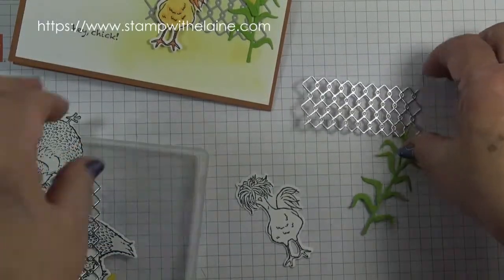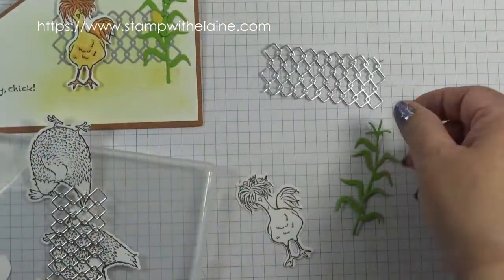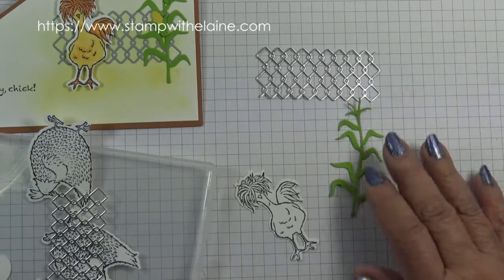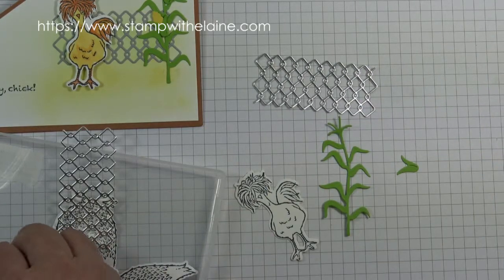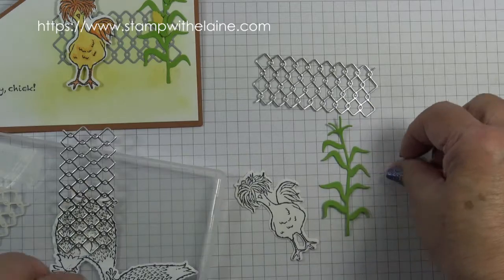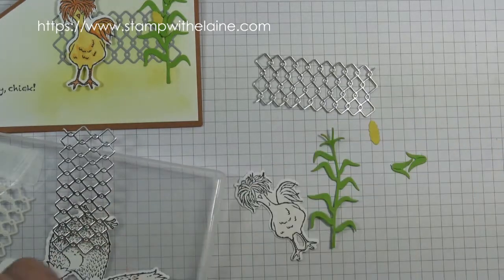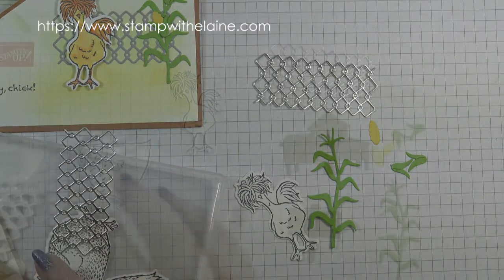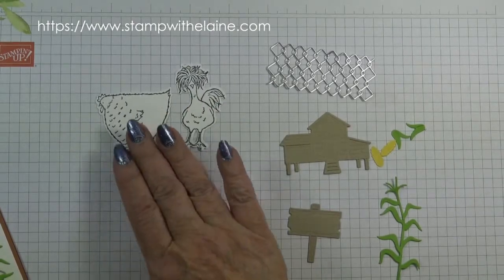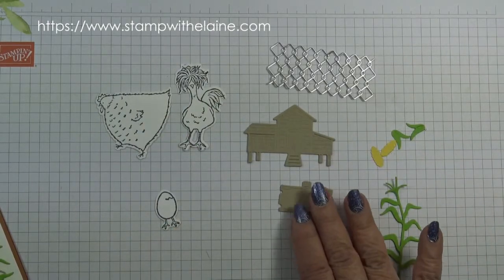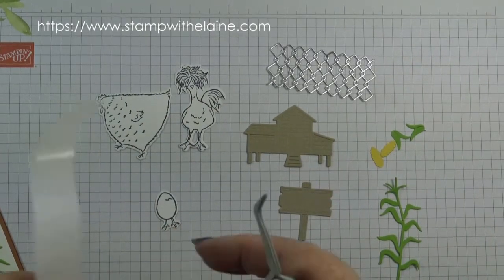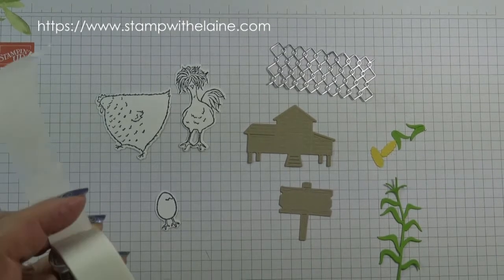I've already pre-die cut my chain link fence, the corn stalk, the husk, need two of those and two of the ears of corn. I also need these three chickens, the chicken coop, and the sign. So let's get assembling.